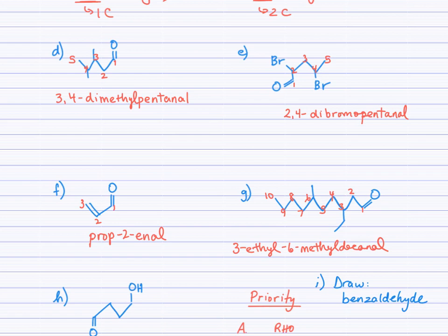And part F, between the double bond and the formyl group, the formyl group takes priority. So I number from right to left, one, two, three, which puts a double bond after two. I do not need to number the location of the aldehyde because it's always carbon number one. So prop-2-enal. For part G, I'll number from the right. I see an ethyl off of three, a methyl off of six, and there's ten carbons in this aldehyde. Three ethyl, six methyl decanal.